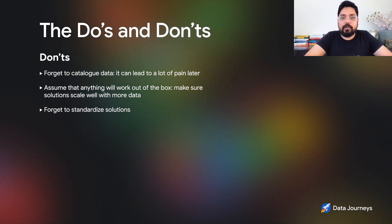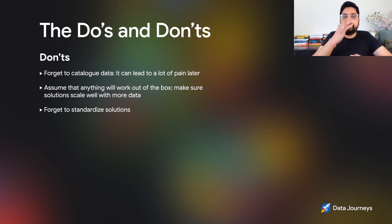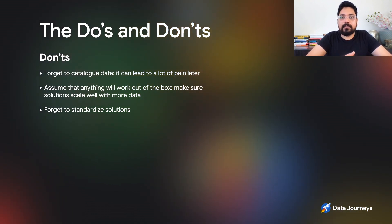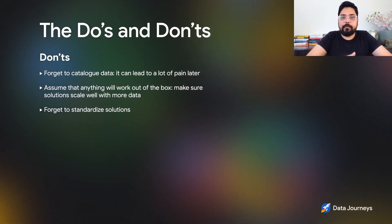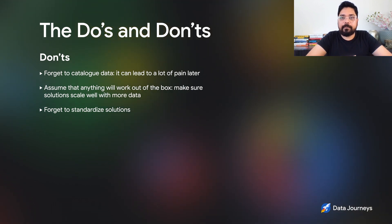The second don't: we cannot assume that anything will work out of the box at our scale. We have to work very closely with the open source community and Google Cloud to make sure that solutions scale well with the volume of our data. And finally, we did not do a great job at standardizing solutions — we let engineers pick and choose whatever solutions worked best at any given time, and over the years that led to a proliferation of solutions at Snap. We are now going back and building blessed solutions that are standardized at Snap so we have a small number of technologies, like Spark, that we can rally behind as a company.